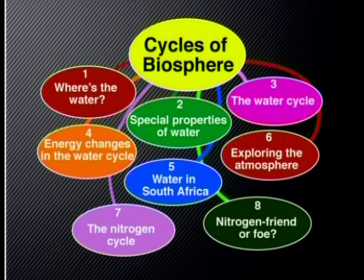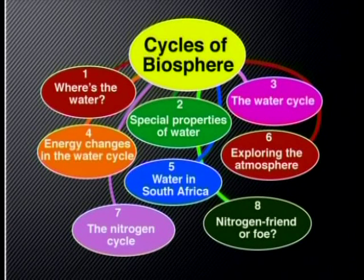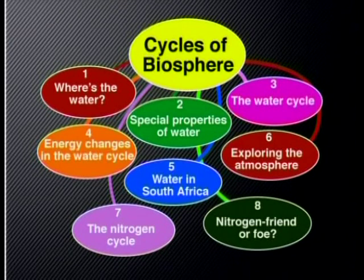There are eight lessons in this series in which we investigate the water cycle and the nitrogen cycle. We show how the hydrosphere, atmosphere and lithosphere are connected and provide the conditions required to support life. This series of lessons links to the core knowledge strand of chemical systems. We have chosen to address the themes of global cycles and the hydrosphere.